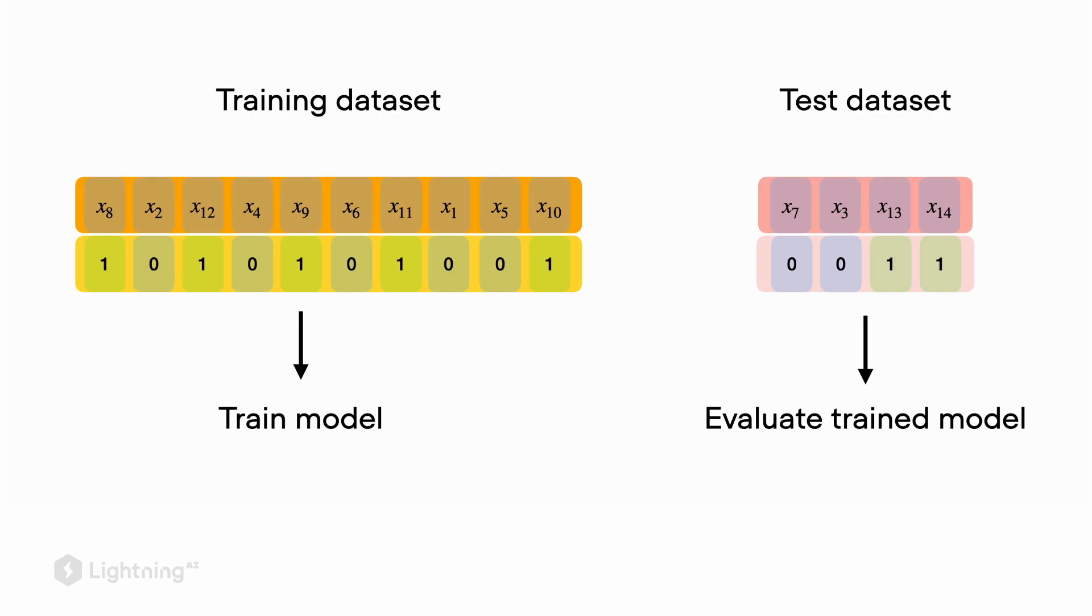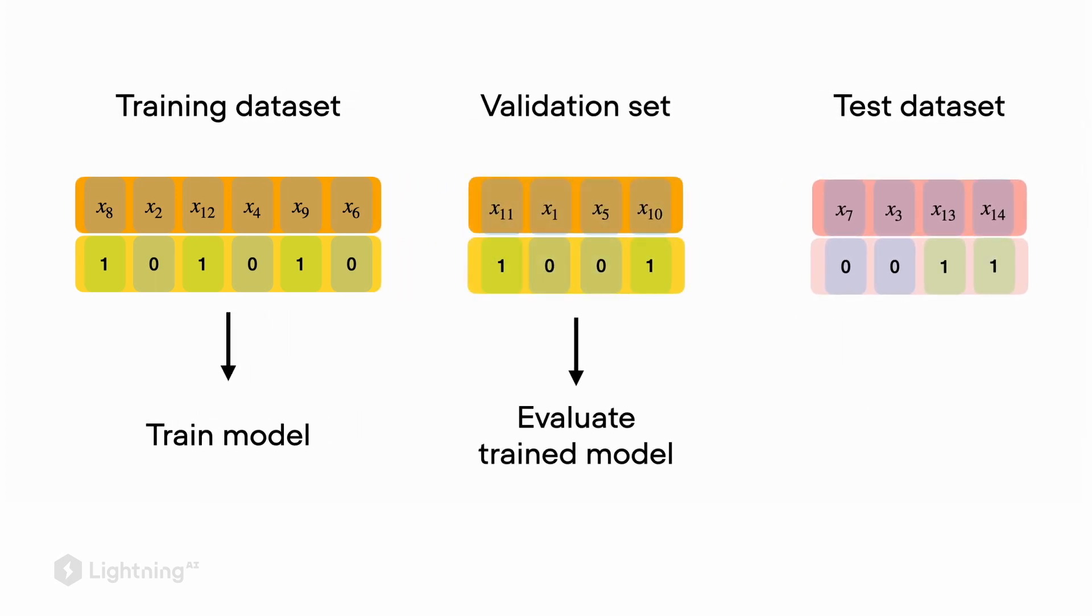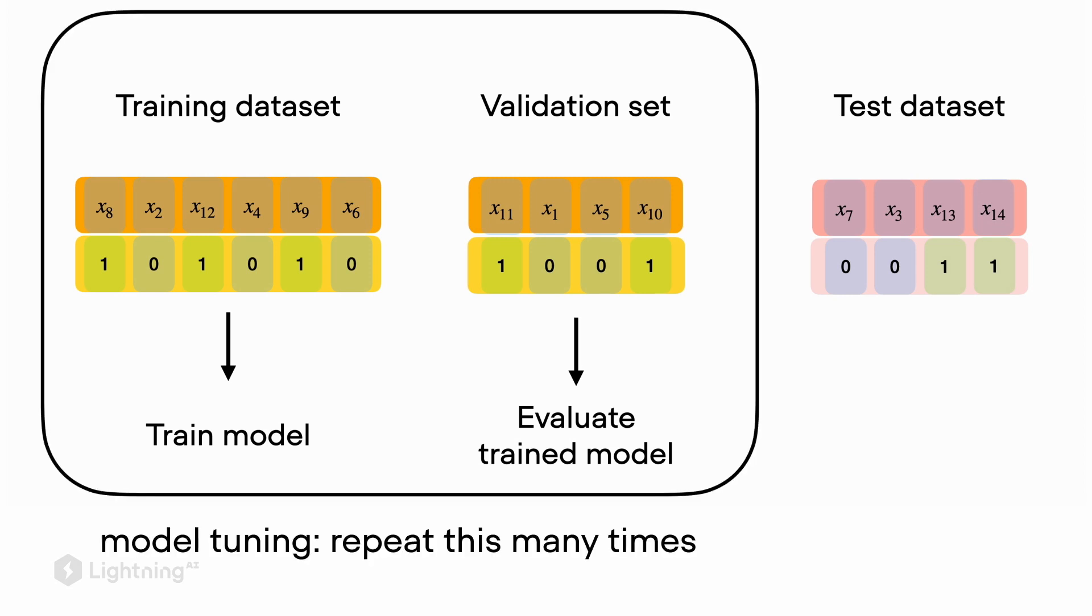However, in typical workflows, we often have to tweak certain parameters of our model. So for that, we also introduce an additional validation set. You can think of this validation set as an additional split off from the training dataset. In other words, we use the training dataset to train the model and the validation set to tune our model. We will see later how this works in practice.